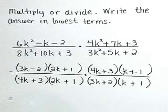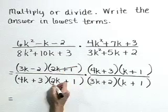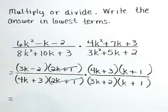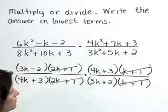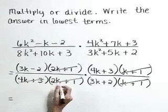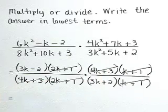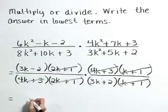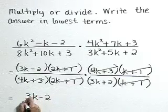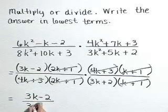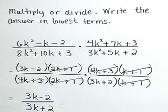Now to the fun part. Let's cancel our common factors: 2k plus 1 out of both the numerator and denominator, k plus 1 in both, as well as 4k plus 3. That's going to leave us with the reduced form 3k minus 2 over 3k plus 2.